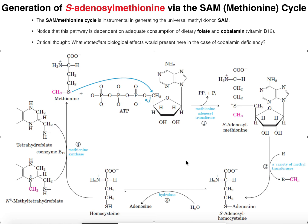Welcome back to Amino Acid Metabolism on Catalyst University. In this video we're going to discuss the generation of S-adenosylmethionine, also called SAM, which is going to occur via a cycle called the SAM cycle, also called the methionine cycle.